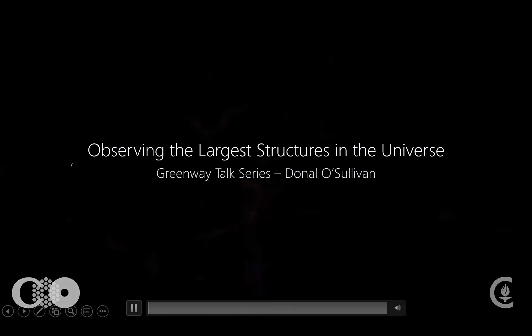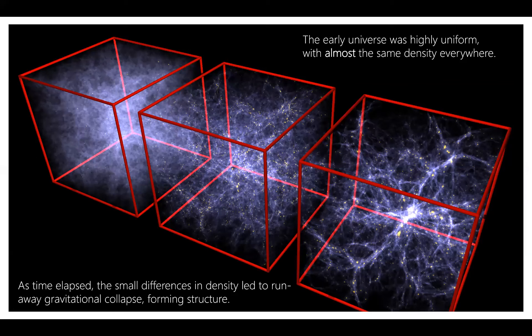The early universe was quite uniform in density — we know this from the cosmic microwave background radiation. We have good observational evidence that the early universe was smooth in temperature or density to one part in 10,000. Over time, tiny overdensities — small regions just one part in 10,000 more or less dense than adjacent regions — came from quantum fluctuations that got blown up during inflation.